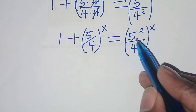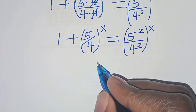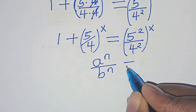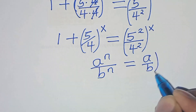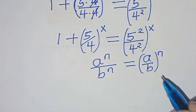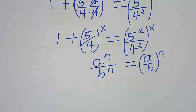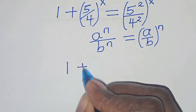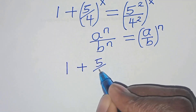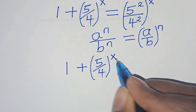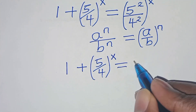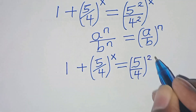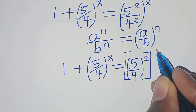We find that 5 to power 2 over 4 to power 2 is in the form of a to power n over b to power n, which we can express as (a over b) raised to power n. Applying this exponent identity, we have 1 plus (5 over 4) raised to power x equals (5 over 4) raised to power 2, raised to power x.